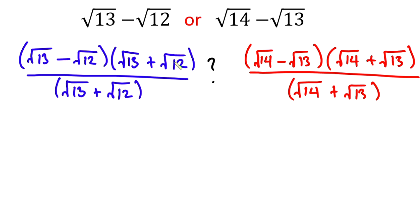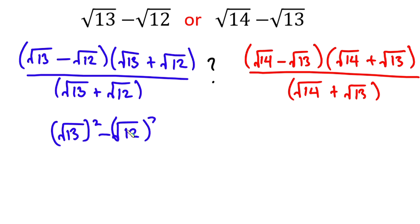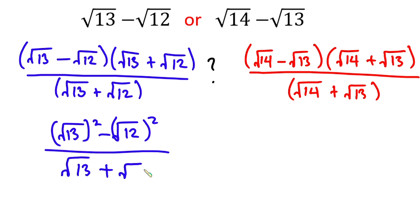Now let's pay attention to the numerators. We can write this whole thing as a difference of two squares — that is, square root of 13 squared minus square root of 12 squared — all divided by root 13 plus root 12.